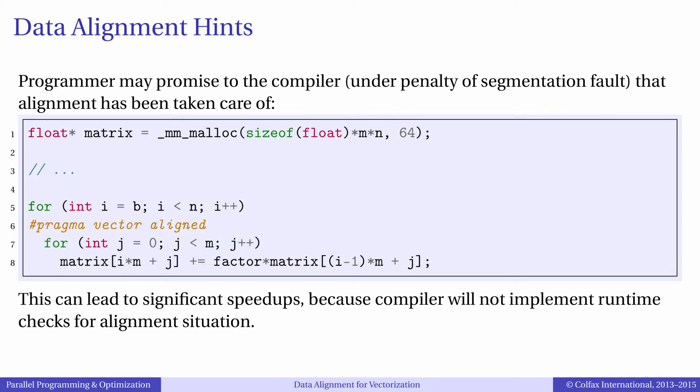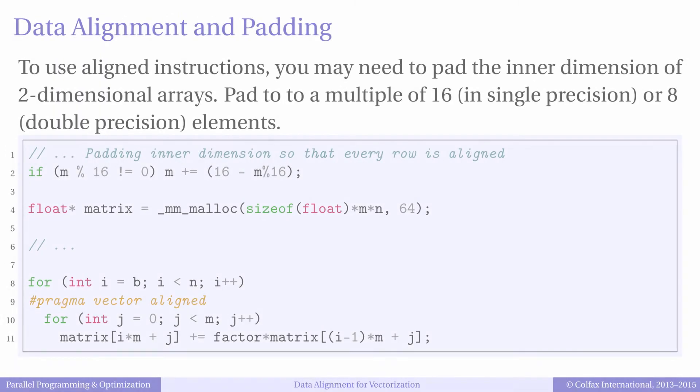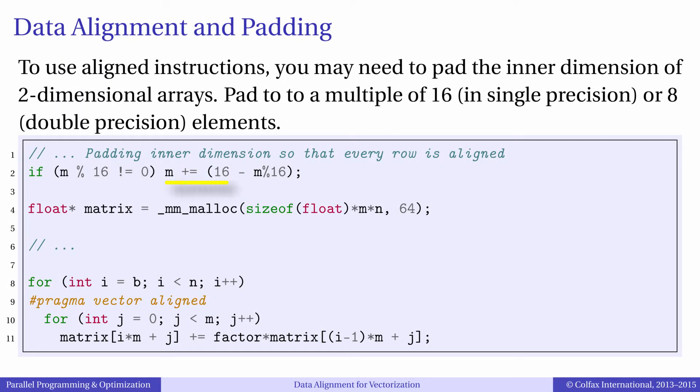Obviously, in this case we cannot have aligned data loads in every iteration in I. However, there is a common way to solve this situation by padding the size of the inner dimension. To pad the inner dimension, we should replace the value of M with a value slightly greater than M, which is also a multiple of 16. This will create some padding at the end of each row. We will never use the data in this padding, but it will guarantee that for any value of I, the row begins on a 64 byte aligned boundary.